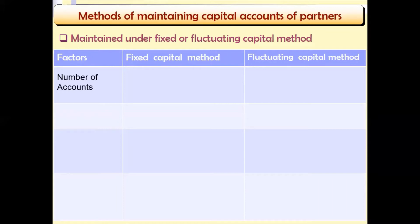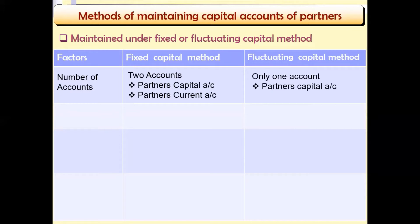The first point of difference is the number of accounts prepared. In the fixed capital method, two accounts are prepared: Partners Capital Account together with Partners Current Account. In the fluctuating capital method, only one account is prepared, which is known as the fluctuating Partners Capital Account.